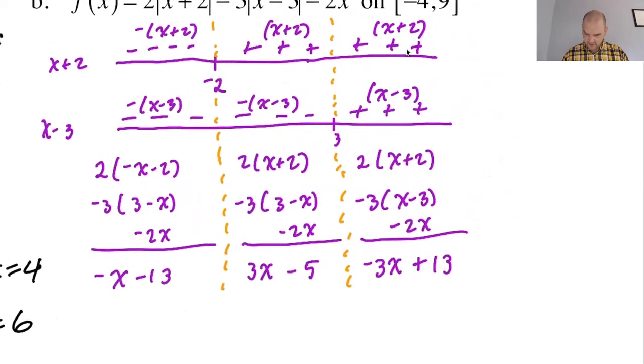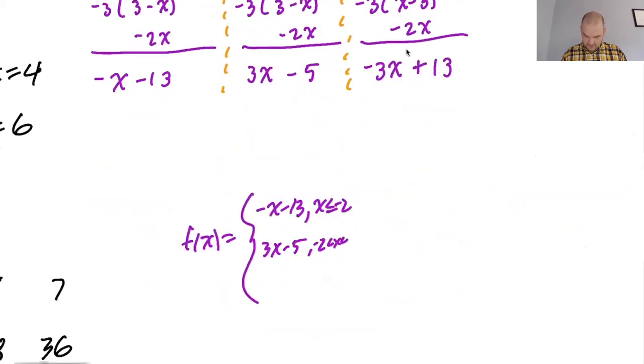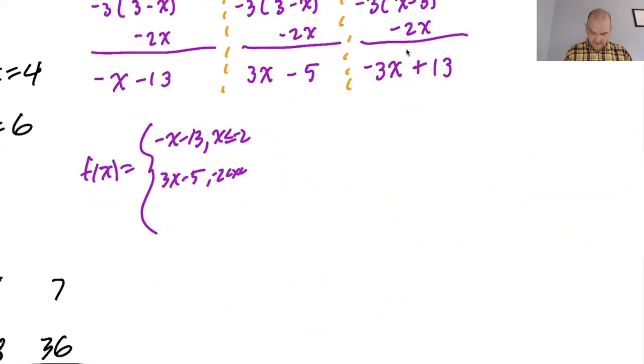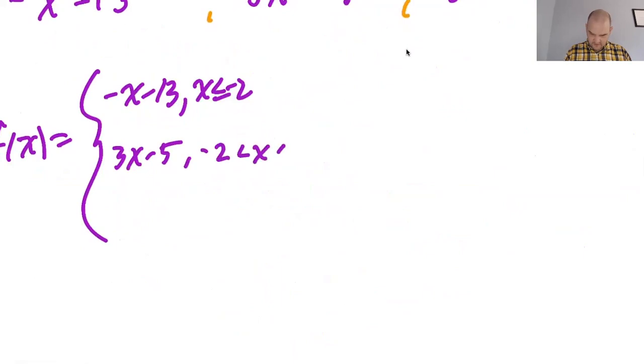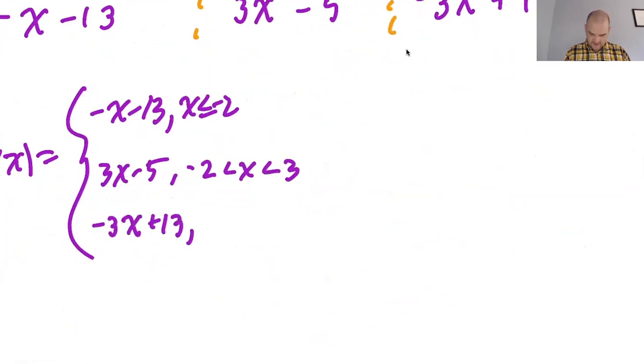So f of x is actually negative x minus 13 when x is less than or equal to negative 2. It's 3x minus 5 when x is between negative 2 and 3. And then it was negative 3x plus 13 for x greater than or equal to 3.